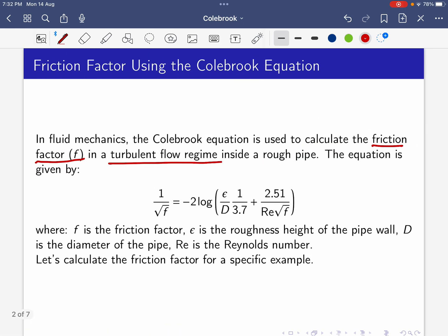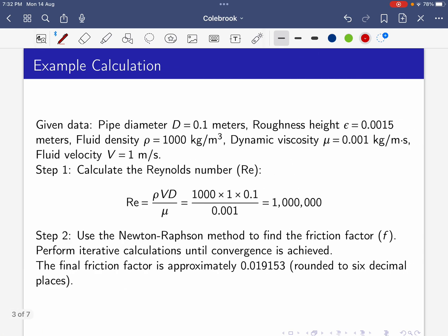First, step one: calculate the Reynolds number. Reynolds number Re = ρVD/μ. If we plug in the values: ρ=1000, V=1, diameter=0.1, divided by viscosity 0.001, the Reynolds number is 1×10⁶, so obviously this is turbulent flow.